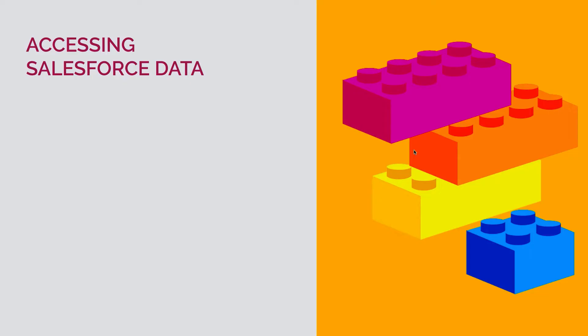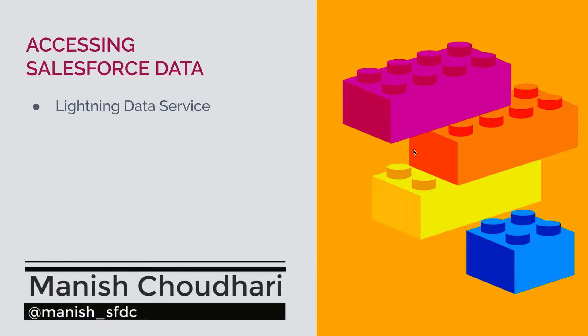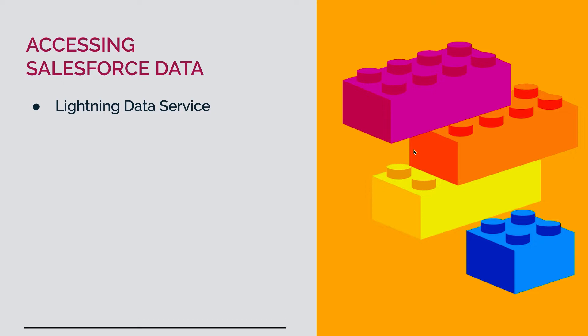From this video, we will start learning about how we can work with our Salesforce data and metadata. There are three ways in which you can access your Salesforce data. The first way is Lightning Data Service, which was also in our Aura component framework. Lightning Data Service allows you to access your Salesforce data or metadata without having a need for a server-side controller.